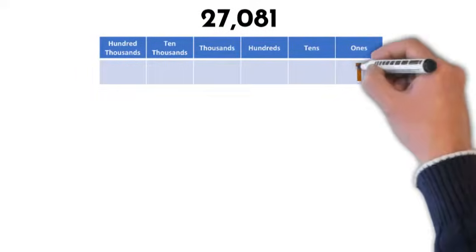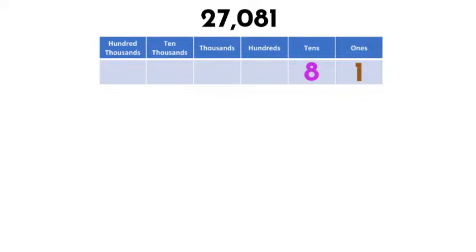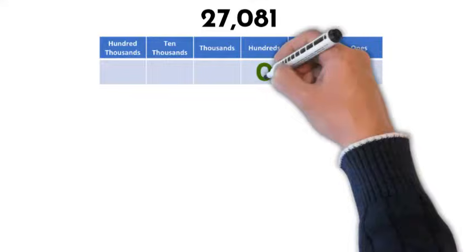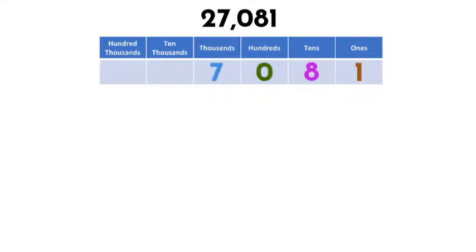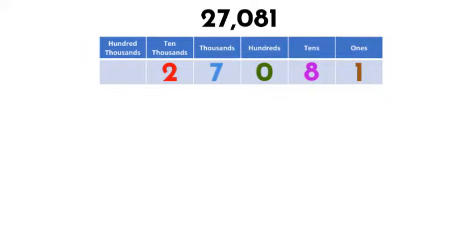Let's start by using a place value chart. Over here we have a 1 in the ones place. Then, we have an 8 in the tens place. Followed by a 0 in the hundreds place. We have 7 thousands. And finally we have a 2 in the ten thousands place.